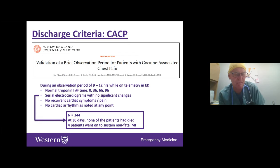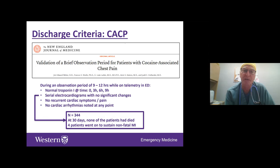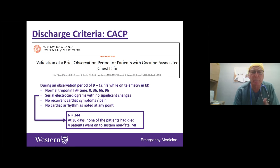John also suggests educating triage nurses that patients with chest pain shortly after cocaine use should prompt early ECG review rather than being placed in a long queue — since these patients may not have striking ECGs or troponins and could otherwise wait four or five hours. Eric agrees this is a great idea and suggests it could be built into nursing triage protocols.